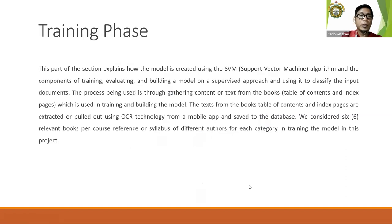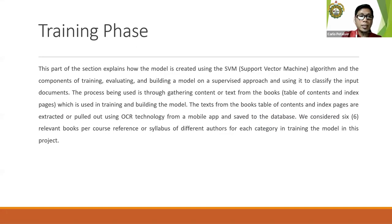For the training phase, this section explains how the model is created using the SVM algorithm and the components of training, evaluating, and building a model on a supervised approach to classify input documents. Text is gathered from the books' table of contents and index pages using OCR technology from a mobile app and saved to the database. Six relevant books from different authors were considered for each course category in training the model.